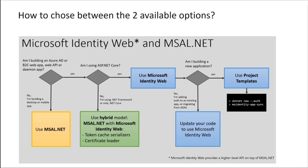How to decide when to use what? If you are on Azure AD or Azure B2C and building a web app, web API, or daemon app on ASP.NET Core, go for Microsoft Identity Web. If you are on .NET Framework or .NET Core, you can use the hybrid model with MSAL.NET extensions and Microsoft Identity Web — you get the benefit of token caches, serializer, and certificate loader. If you are building desktop or mobile applications, MSAL.NET is the best choice.